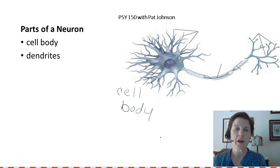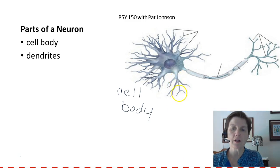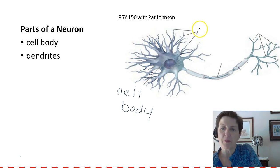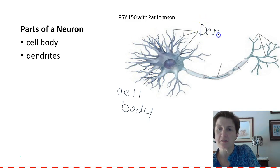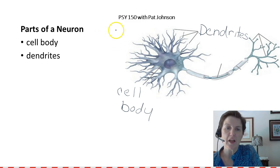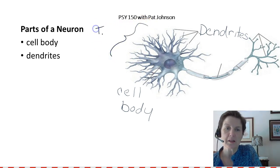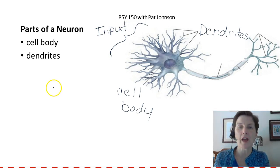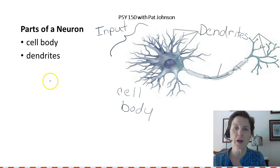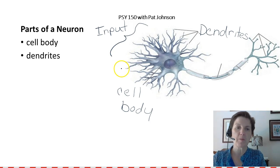The next part of a neuron that I want to talk about are the dendrites. All of these branches here are dendrites. The dendrites and the cell body are the receiving end — we could also call all of this the input end of the neuron. In our next mini lecture, we'll talk about how a neuron talks to another neuron, and this is where the message is going to start, with the dendrites and the cell body.